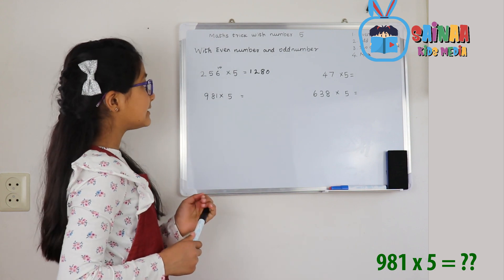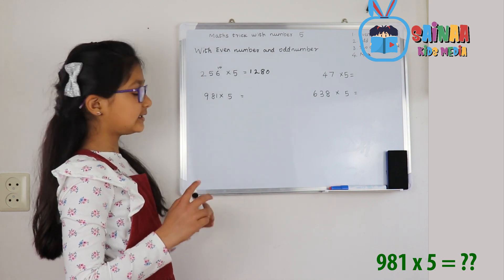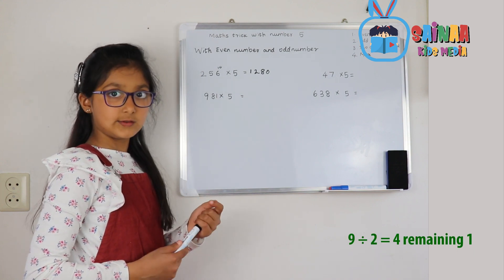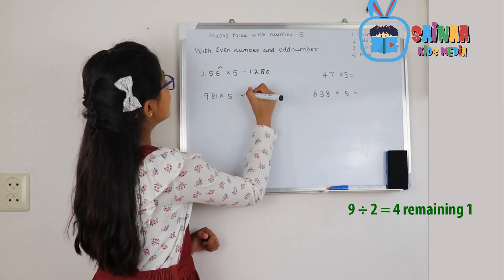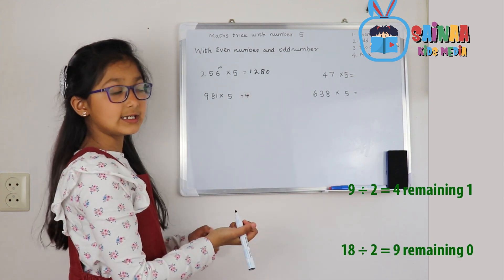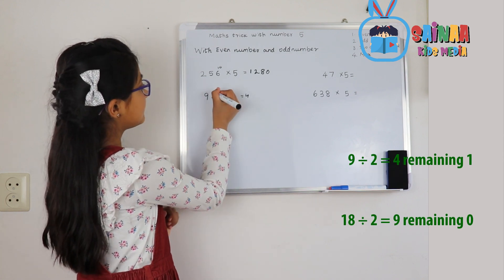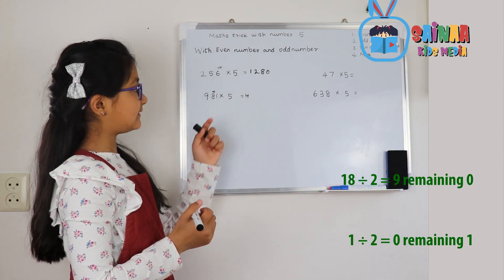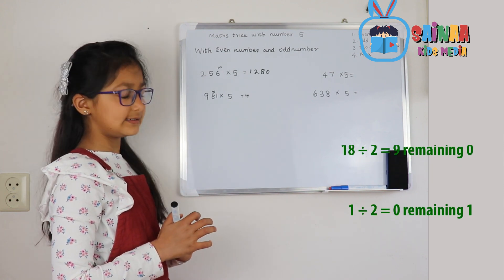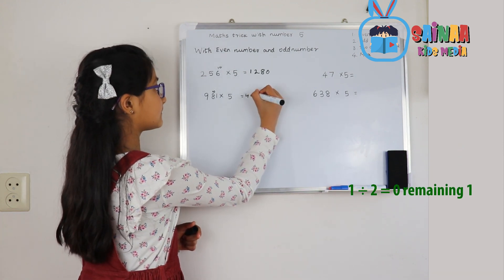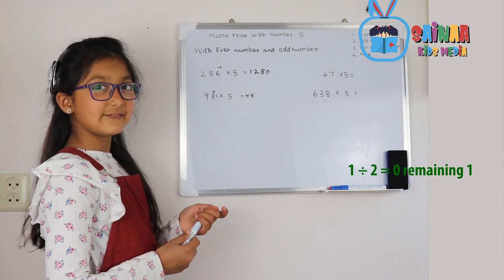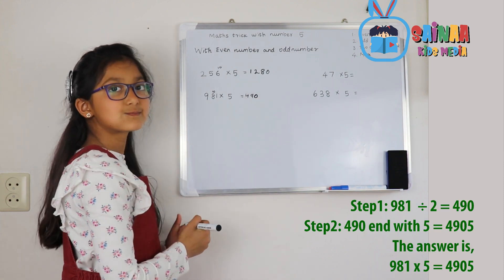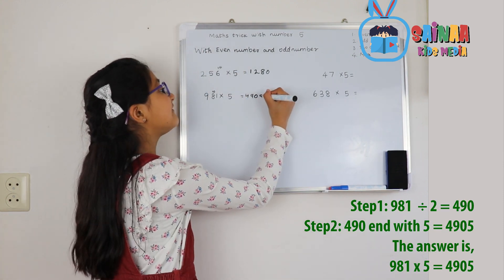981 times 5: 9 divided by 2 is 4, remaining 1. That 1 we give to 8, turning it into 18. 18 divided by 2 is 9. 1 divided by 2 is 0, remaining 1. Then we turn that 1 into 5, and we've got our answer.